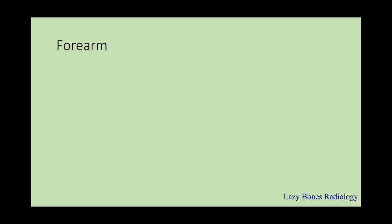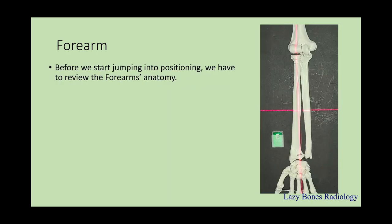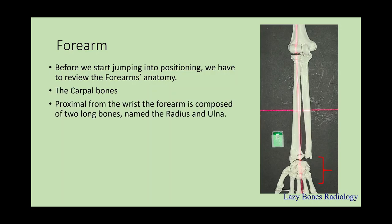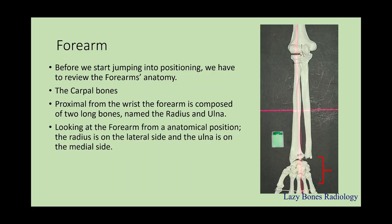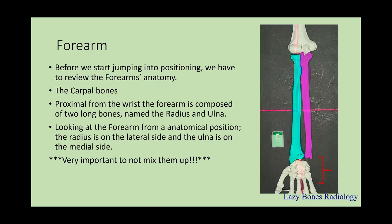The forearm. Before we jump into the positioning, we first have to review the forearm's anatomy. The carpal group. Proximal to those are two long bones known as the radius and ulna. When looking at the forearm from an anatomical position, the radius is on the lateral side, while the ulna is on the medial side, as you can see here on my diagram. It is very important not to mix them up.